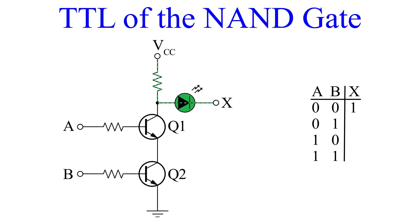Next, we apply a voltage to B, making A equals 0 and B equals 1 for our inputs. Q2 has a base bias, but there is no current from Q1, so the LED remains lit and our output is 1.